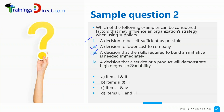A decision that a service or product will demonstrate high degrees of variability — normally when we use cloud systems, the cloud can accommodate lower and higher demands of usage, so it can be a correct answer. Cloud allows us to manage fluctuating demand. However, we don't have the answer with two, three, and four. One is ruled out, so the best answer is two and three — B is correct.